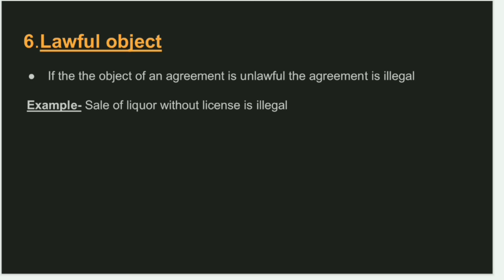The sixth essential is lawful object. If you want to make a contract, the object should be lawful. For example, selling liquor without a license is illegal, but if you have a license, then it is legal.